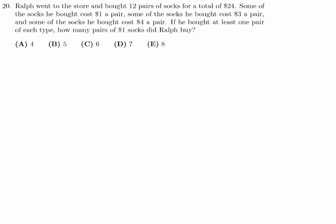Ralph went to the store and bought 12 pairs of socks for a total of $24. Some of the socks he bought cost $1, some cost $3 a pair, some cost $4 a pair. If he bought at least one pair of each type, how many pairs of $1 socks did he buy? So X, Y, and Z is what I'll call the $1 pairs, the $3 pairs, and the $4 pairs.